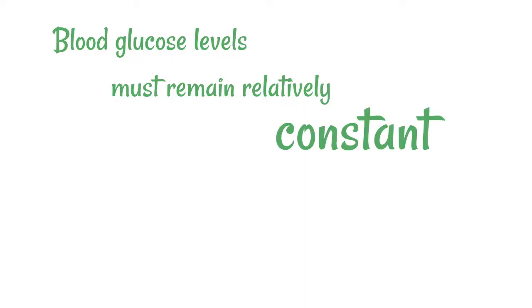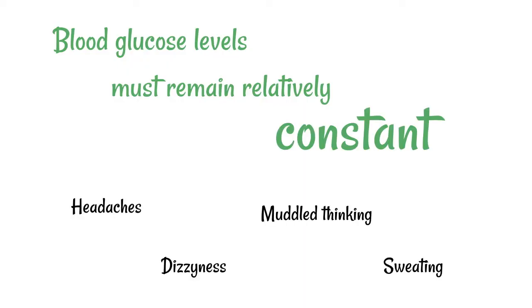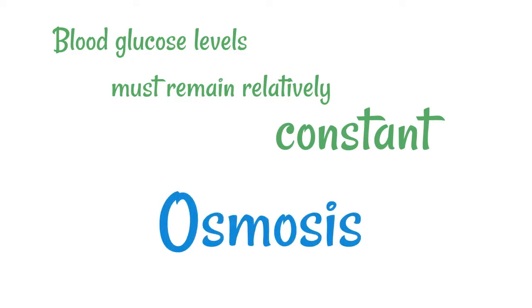Blood glucose levels must remain relatively constant inside the body. If they don't, there are all sorts of nasty side effects. In the context of osmosis, if we change the solute concentration — for example, a solute like glucose — we're also changing the water potential, which means water can move in the wrong direction. This could be a disaster for the body's tissues, and if blood glucose gets out of control, there is a risk of death.